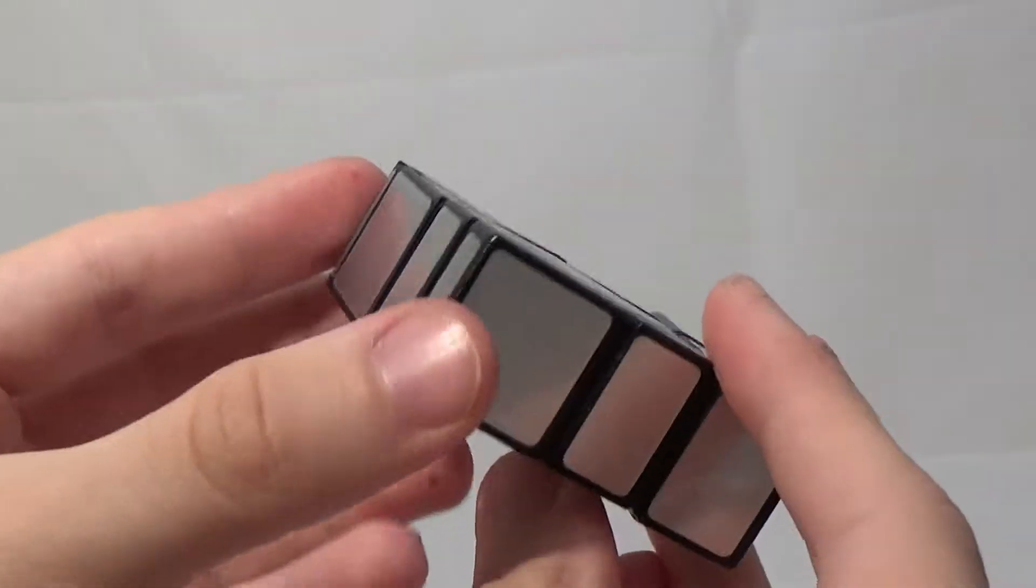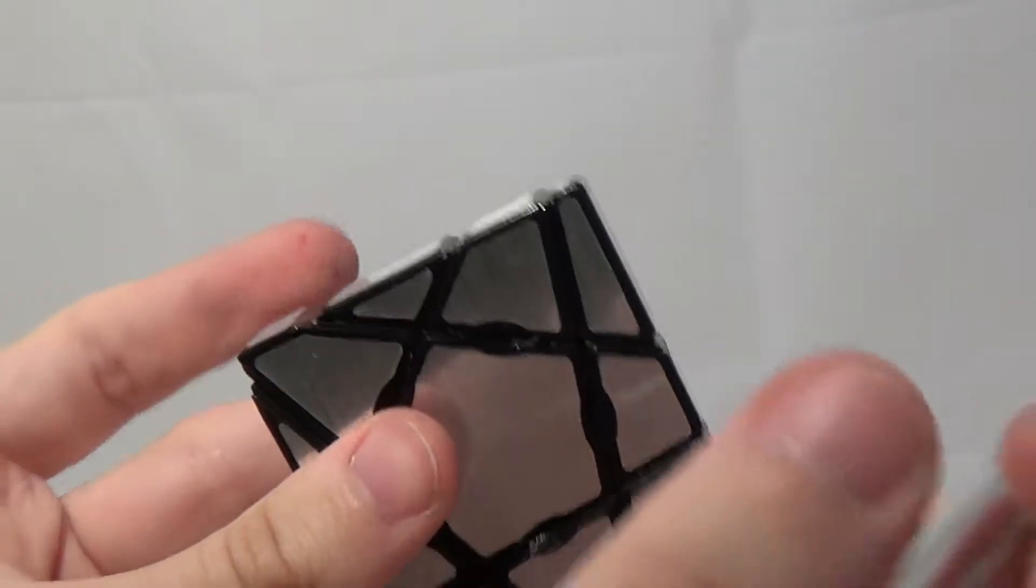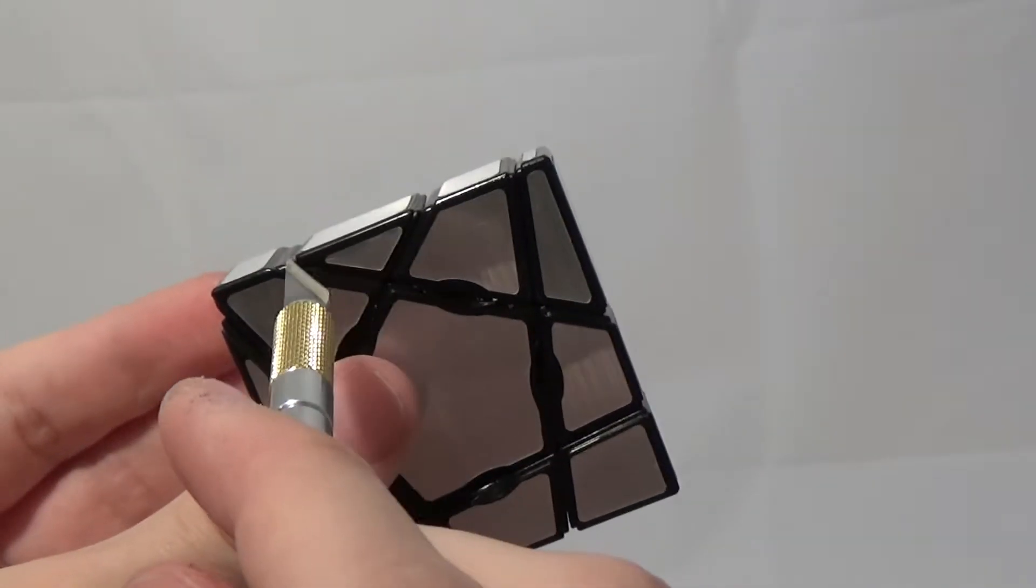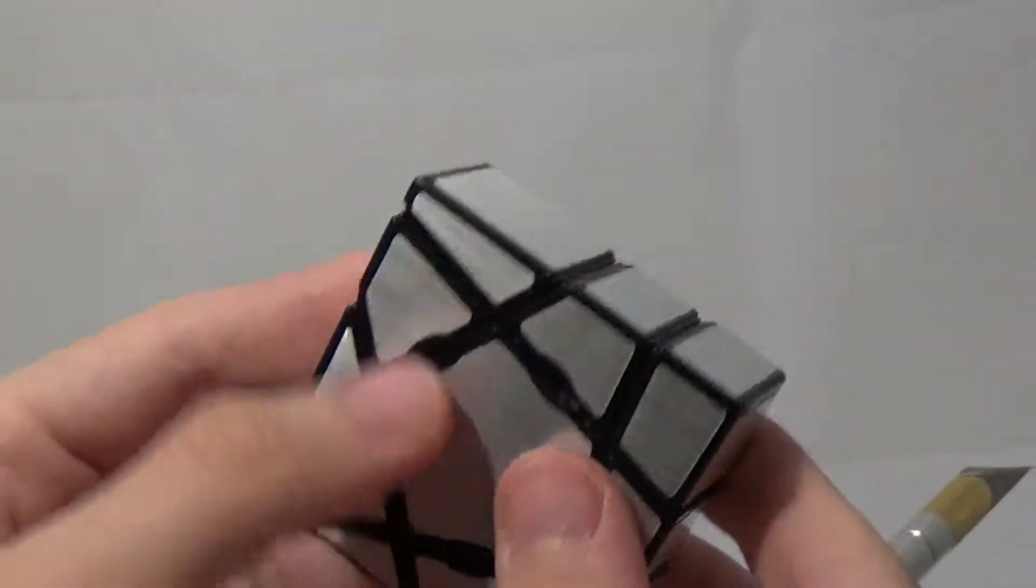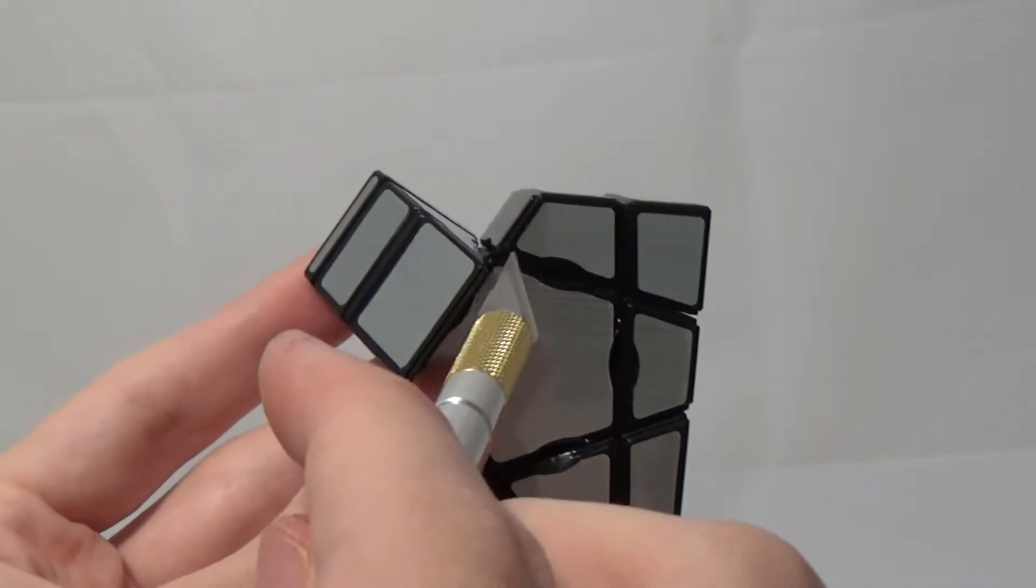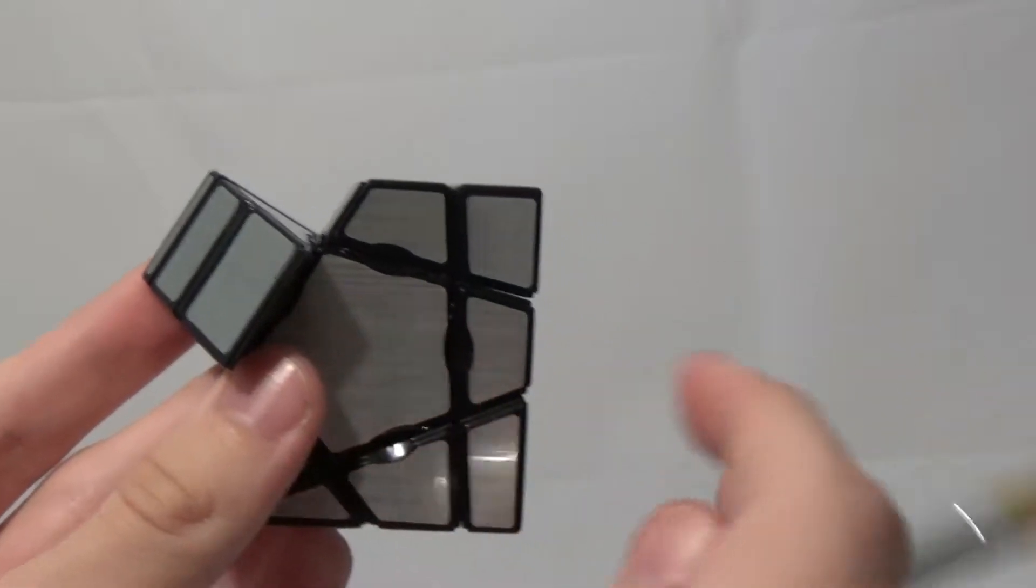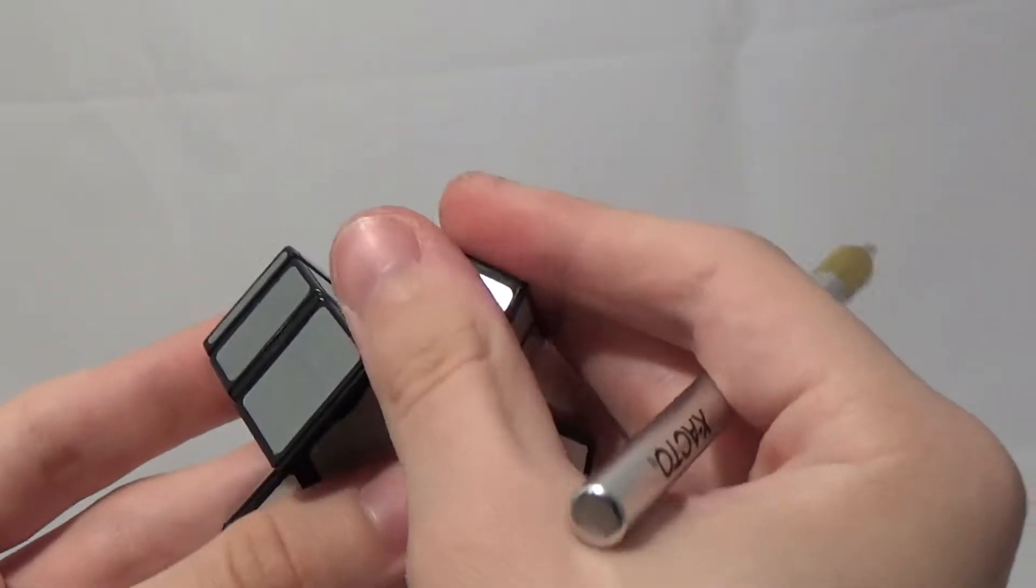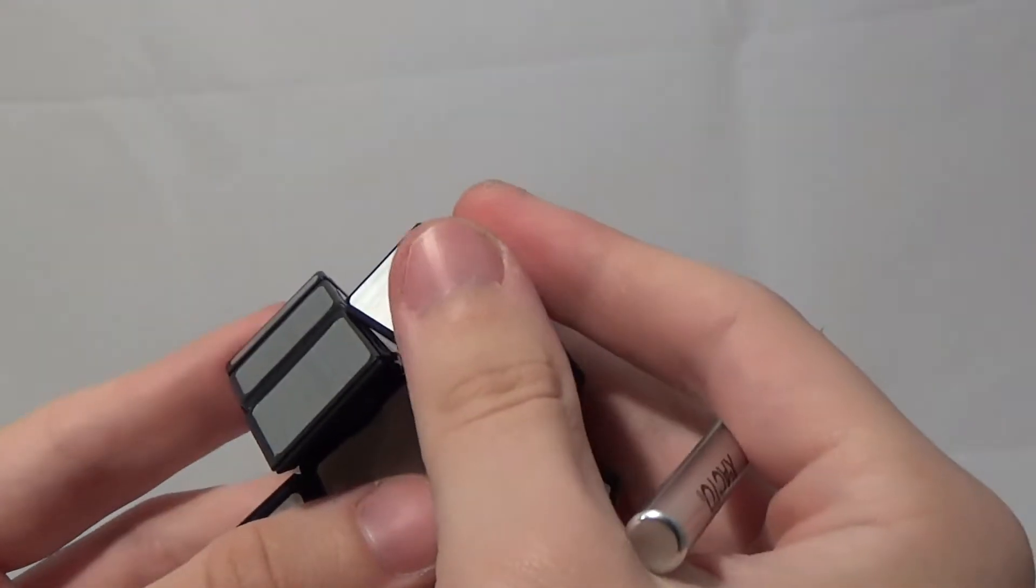This mod has two parts. First, the pieces need to be extended and sanded so that the puzzle is a regular pentagonal prism. The second part is shaving the edges and corners down so that super floppy cube moves can be made. Due to simple geometry, these turns can't easily be done on a flat-faced prism.